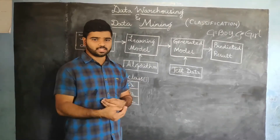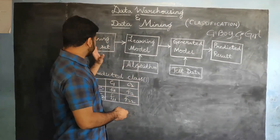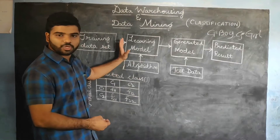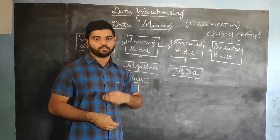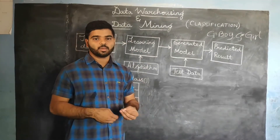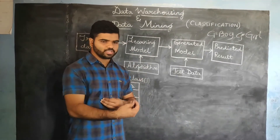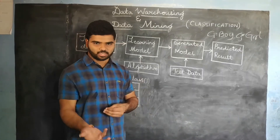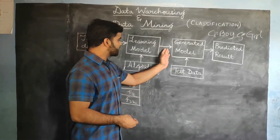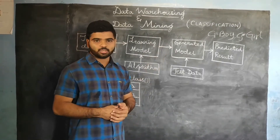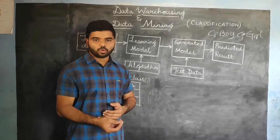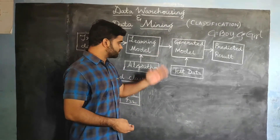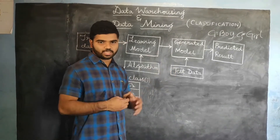As soon as the system learns the training data set with the help of the algorithm — similarly to how a baby learns by being shown several examples of boys and girls — it generates a model.